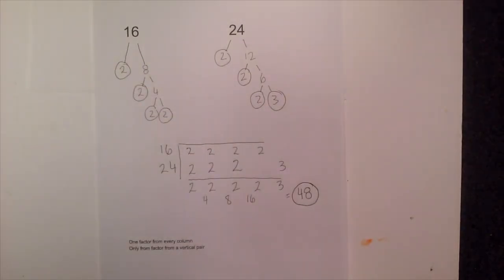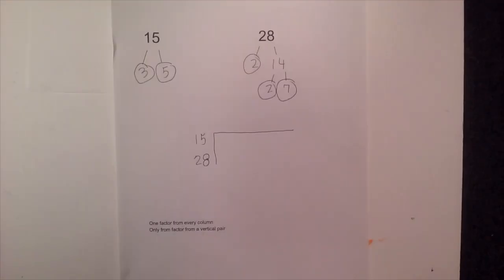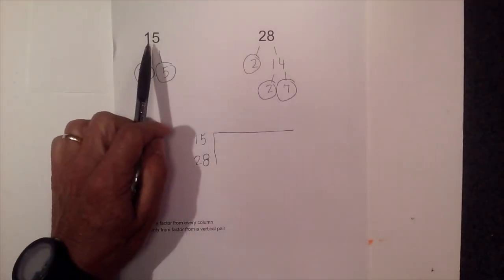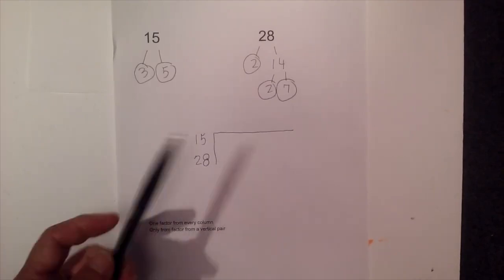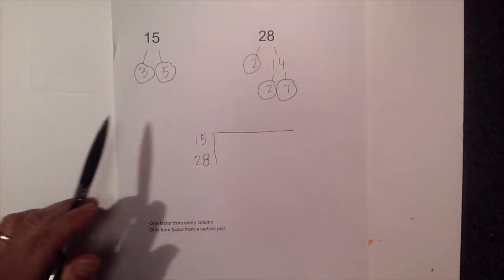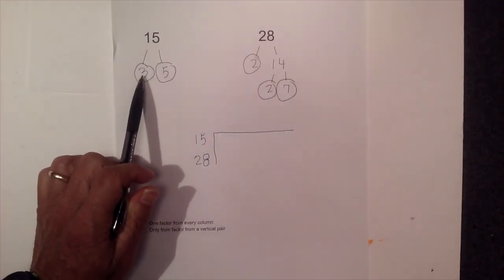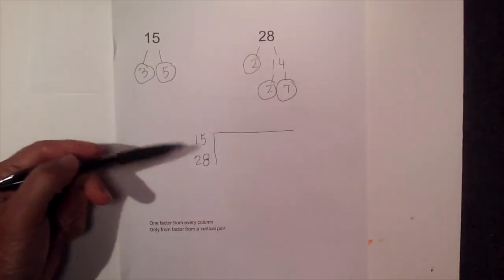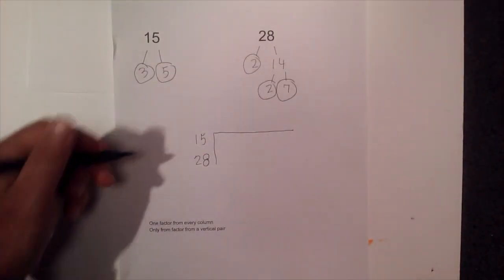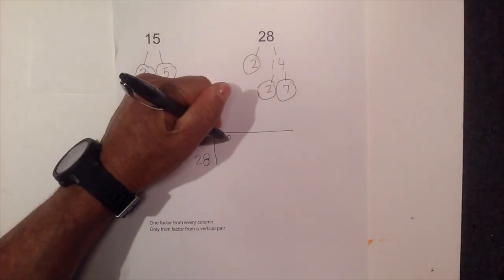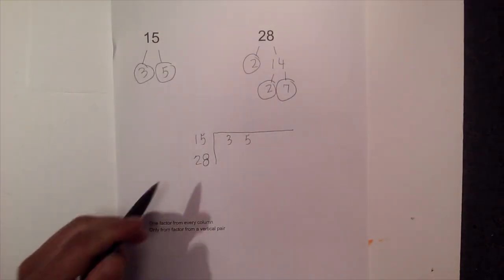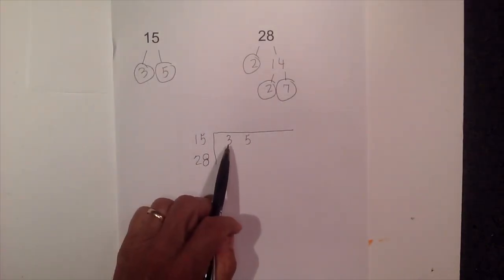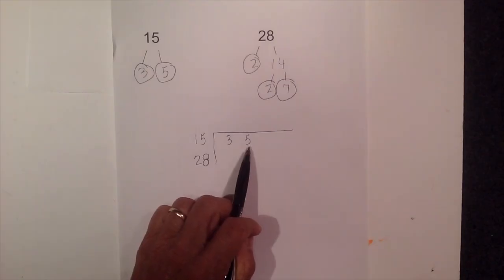Now let's try another one. Okay now on this next one we are going to find the LCM of 15 and 28. And to speed up the process just a little bit I went ahead and created the factor trees. And notice that I have all the prime numbers circled. So now I am going to create my prime factorization chart. So I am going to write 3 and then a 5. Now for 28 since I do not have a 3 I am going to skip that. And I do not have a 5 so I am going to skip.